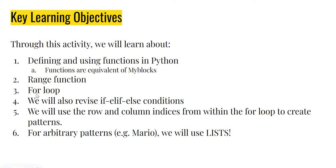We are going to learn about an extremely important loop called the for loop, which forms the backbone of many programming exercises. We'll look at the for loop very closely and see how it works. We are also going to revise if/else conditions, because that's how we can create different colors inside the squares. We will use the row and column indices from within the for loop to create patterns — this requires a little bit of thinking about how the for loop works and what's happening with the counter variable.